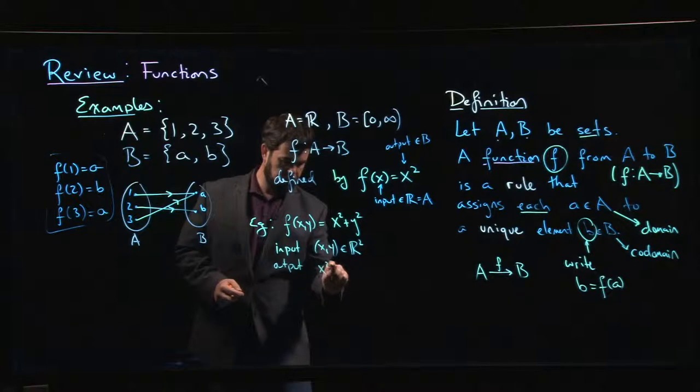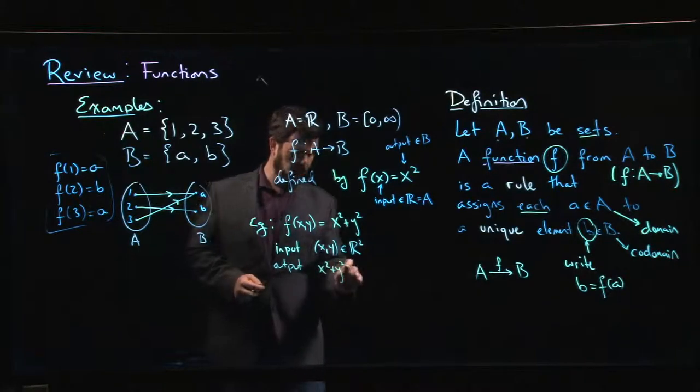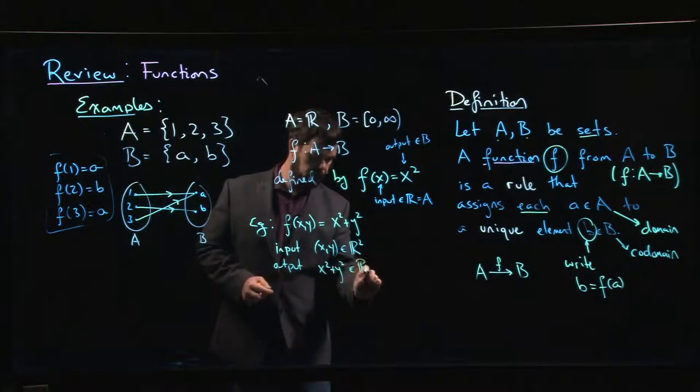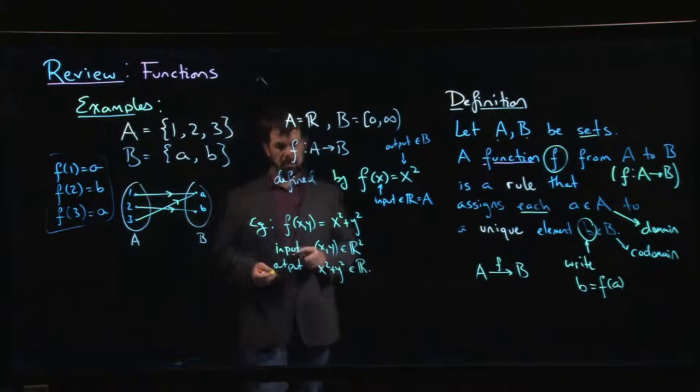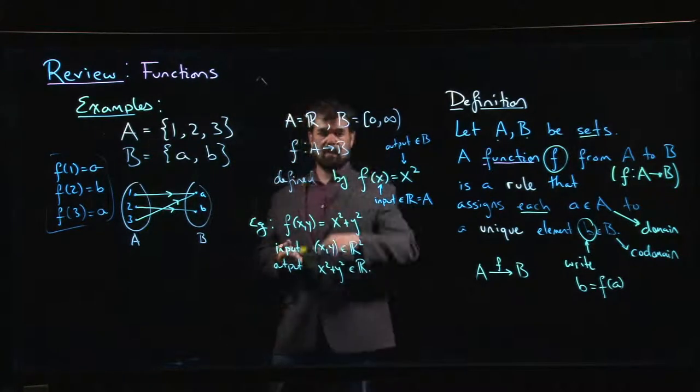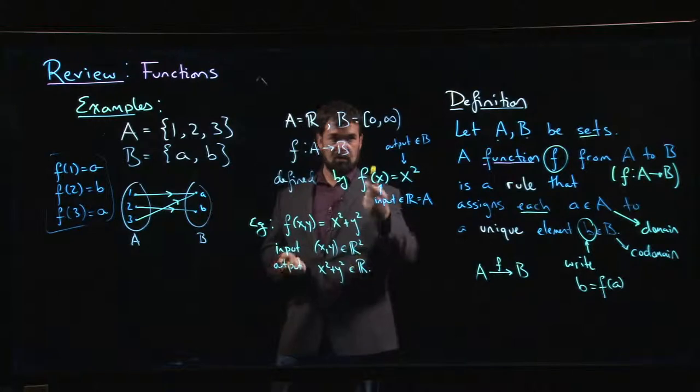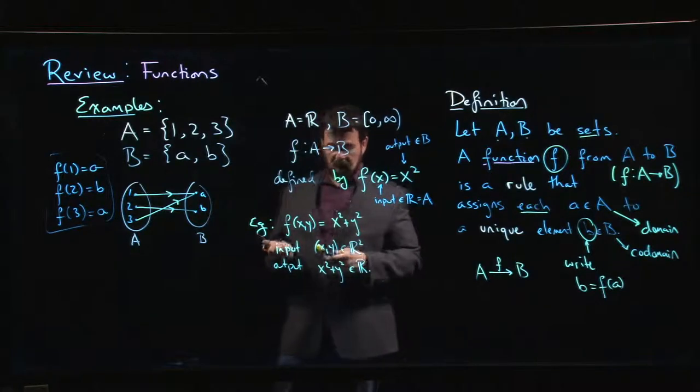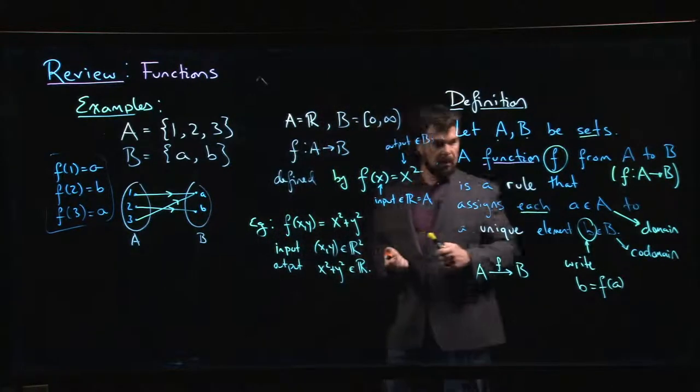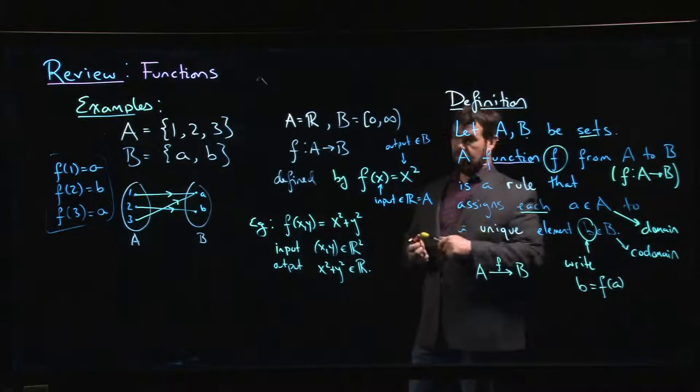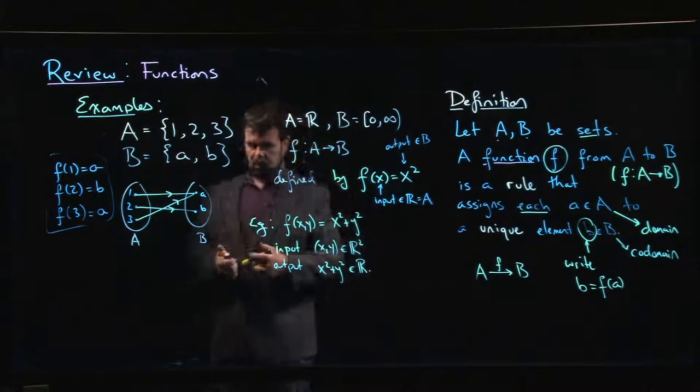The output would be this number x² plus y², which is an element of R. Of course, it's never negative, so we could go with 0 to infinity if you want. There's no requirement though that your function hits every element of the codomain.